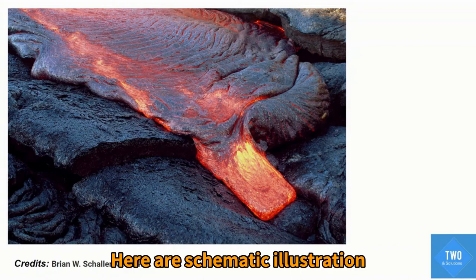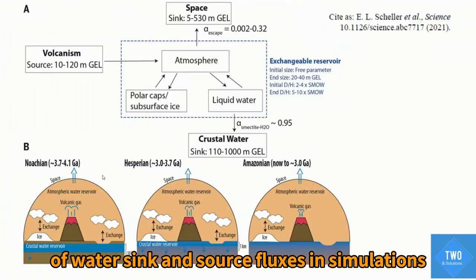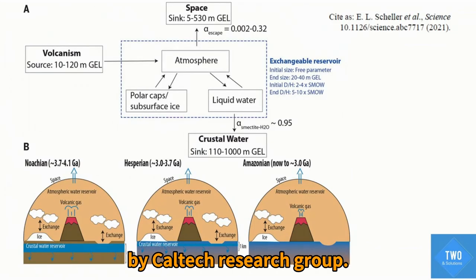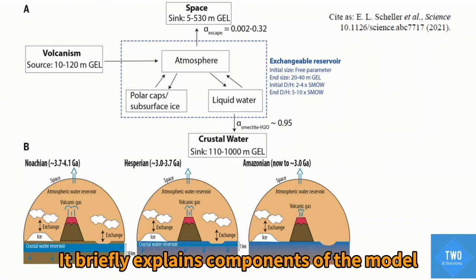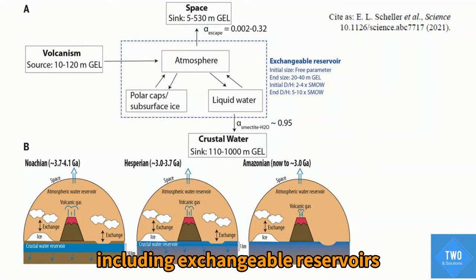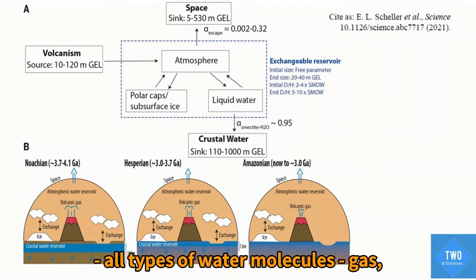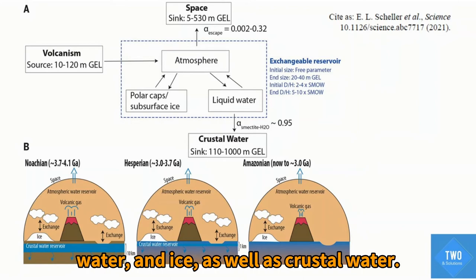Here is a schematic illustration of water sink and source fluxes in simulation by the Caltech research group. Briefly explaining components of the model with values including exchangeable reservoirs, all types of water molecules: gas, water ice, as well as crustal water.